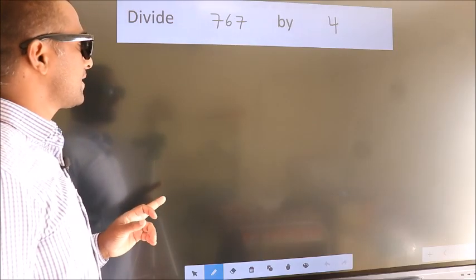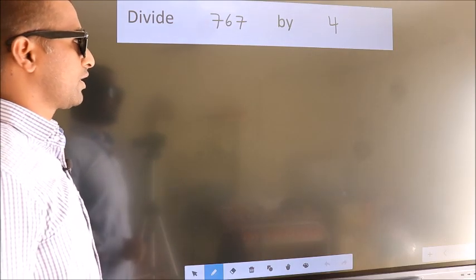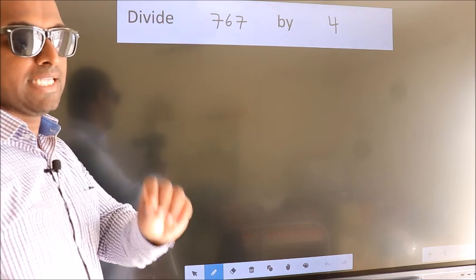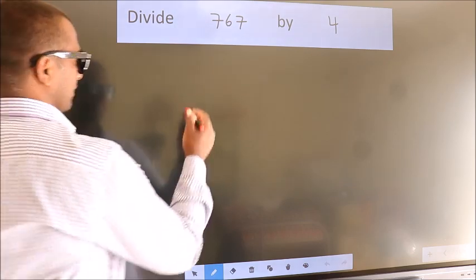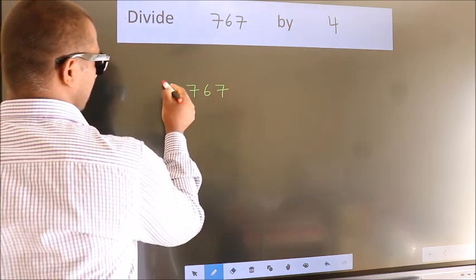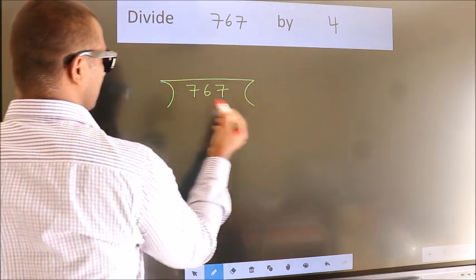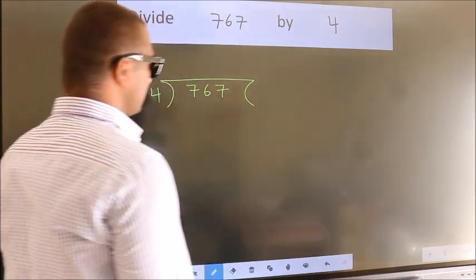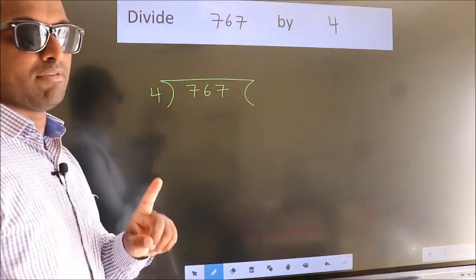Divide 767 by 4. To do this division, we should frame it in this way: 767 here, 4 here. This is your step 1.